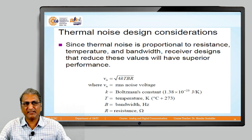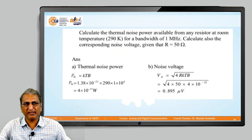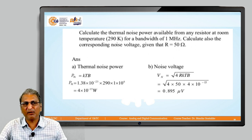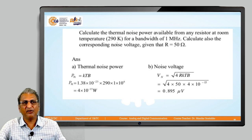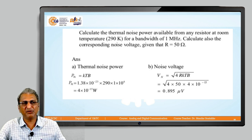For thermal noise design consideration, V_n = √(4kTbR). Using this equation, we are going to solve some problems. Calculate the thermal noise power available from any resistor at room temperature, 290 Kelvin, for a bandwidth of 1 megahertz. Also calculate the corresponding noise voltage given that R = 50 ohms. We are going to calculate two parameters: thermal noise power and noise voltage.